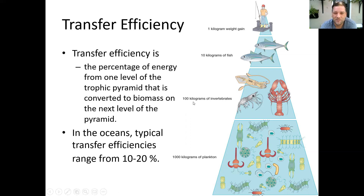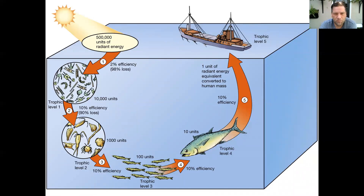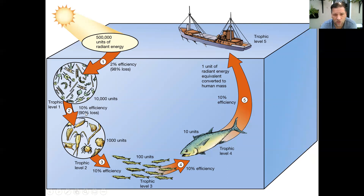You have 100 kilograms, multiply again by the efficiency of 10%, and now you have 10 kilograms. By the time it gets to the person, you have one kilogram of weight gain — that is called transfer efficiency. One of the larger losses is between the energy of the sun and the plankton, which is only 2% efficient. Using the 10% efficiency — another way of looking at it is 90% loss. If it were a 12% efficiency, instead of multiplying by 0.1, you would multiply by 0.12.